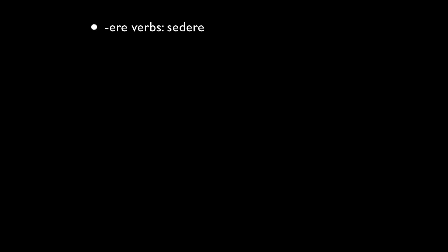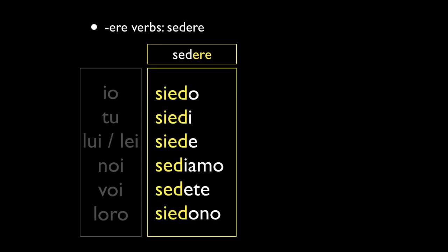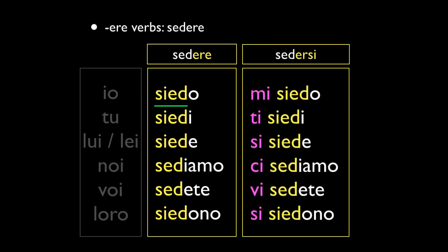The last verb is sedere — it means 'to sit' or 'be sitting.' It's conjugated with a spelling change in the stem: siedo — I sit, siedi — you sit, siede — he/she/you formal sits. Then it goes back to the regular stem: sediamo — we sit, sedete — you all sit, siedono — they sit. You'll notice this is boot-shaped: in the noi and voi forms it goes back to being regular. That's actually a common feature of Romance languages in general — Spanish and French both have it. You also commonly see sedere in a reflexive form, and I've included that to spark your interest. I've made a video on reflexive verbs if you're wondering how we get those mi/ti/si/ci/vi/si pronouns shown in magenta.